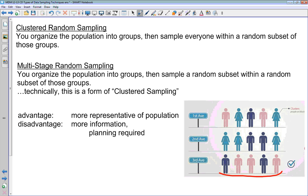Multi-stage random sampling, you do something very similar. You organize the population into groups, but then you sample a random subset within a random subset of these groups. So you might say, I've got my population divided into these three clusters by what street they live on. I'm going to pick two of these clusters, and I'm going to sample a certain number of the population from these two clusters. So I might choose two people randomly from this one and two people randomly from this one, and that would be your survey.